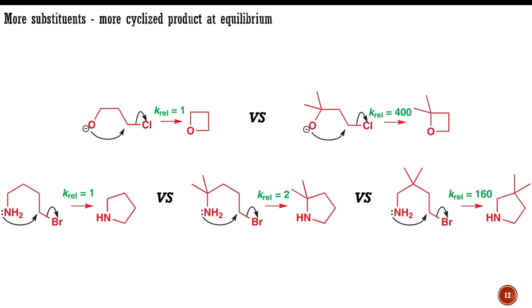This effect is quite general and is known as the Thorpe-Ingold effect after the first chemists to note its existence, in 1915. The Thorpe-Ingold effect is the way in which substituents on the ring increase the rate, or equilibrium constant, for ring-forming reactions. In other words, more substituents mean more cyclized product at equilibrium. The Thorpe-Ingold effect is both a kinetic and a thermodynamic phenomenon.